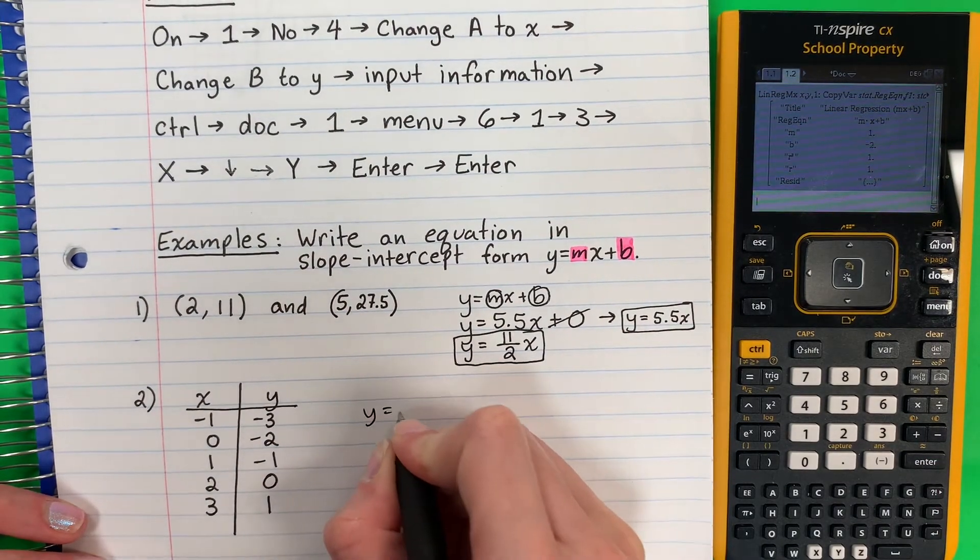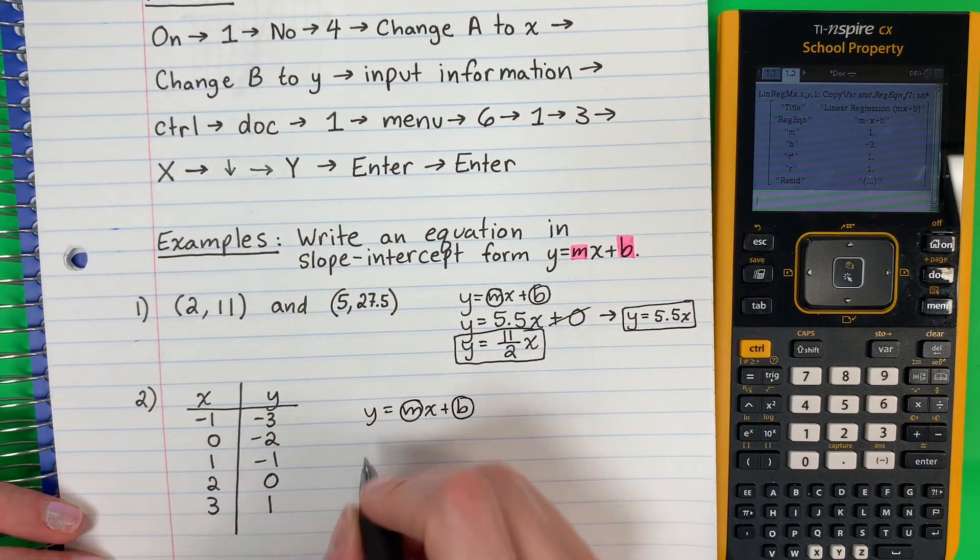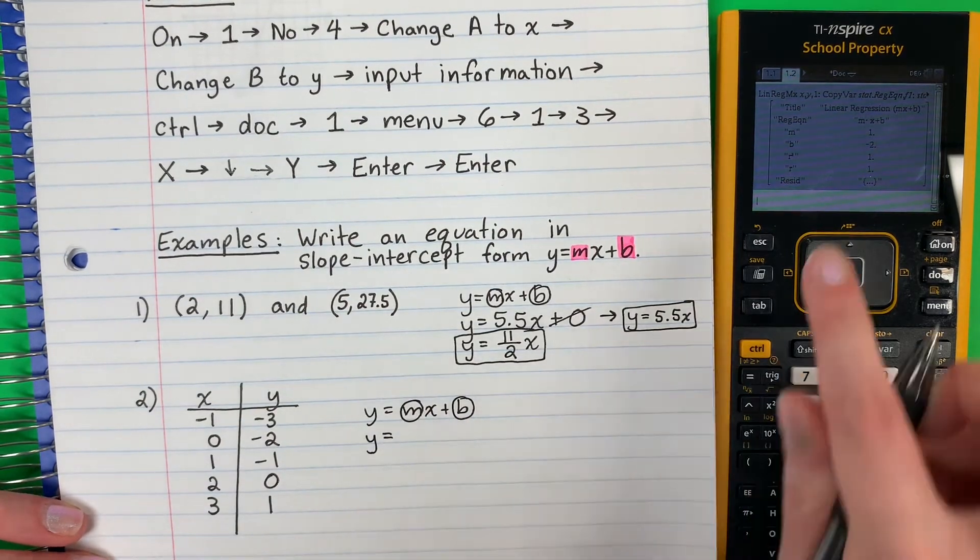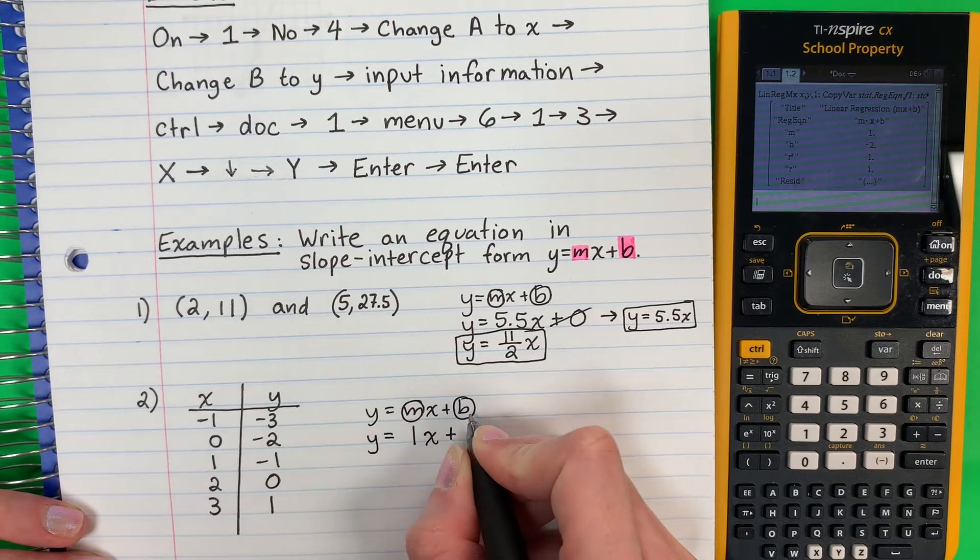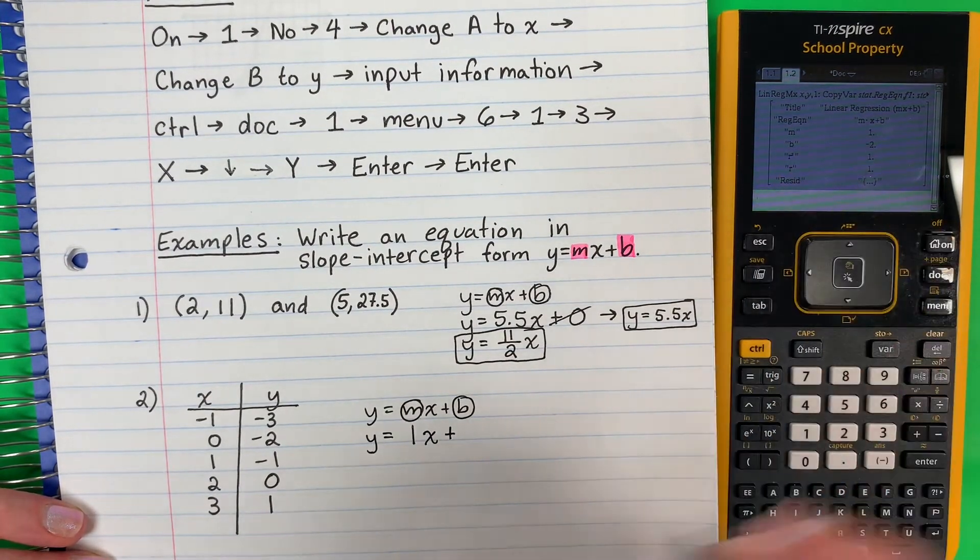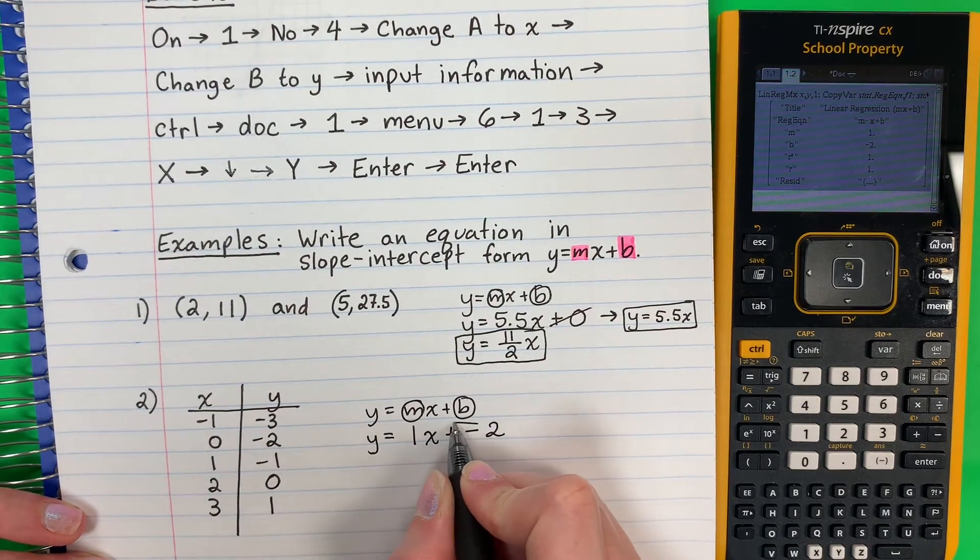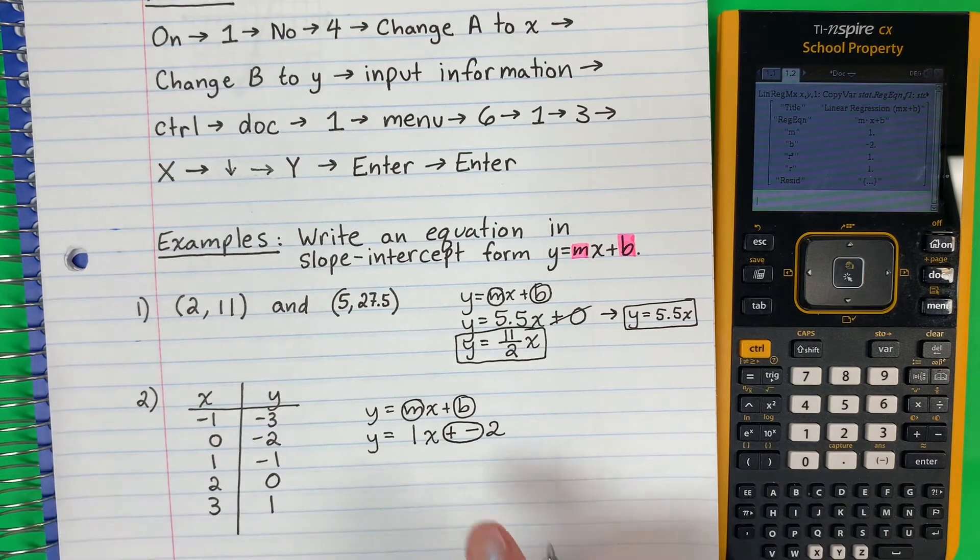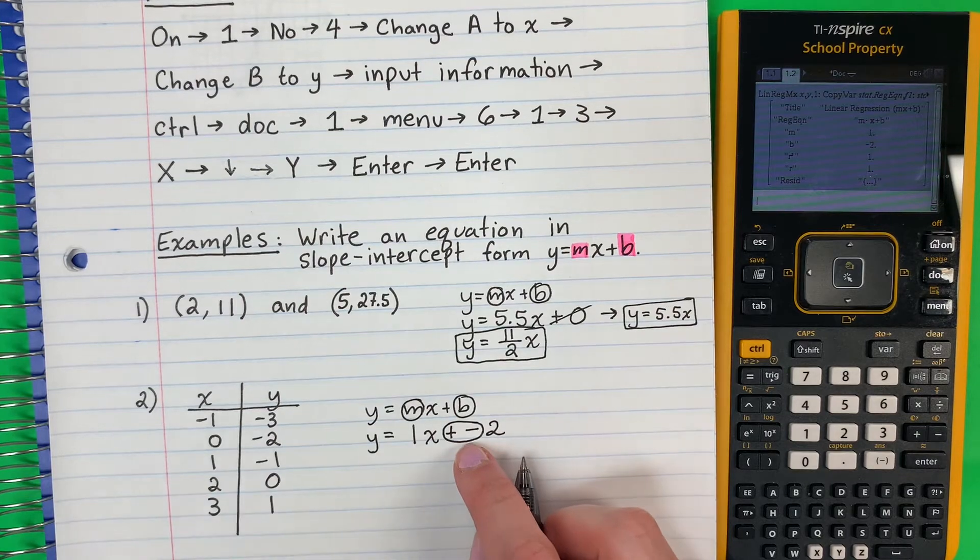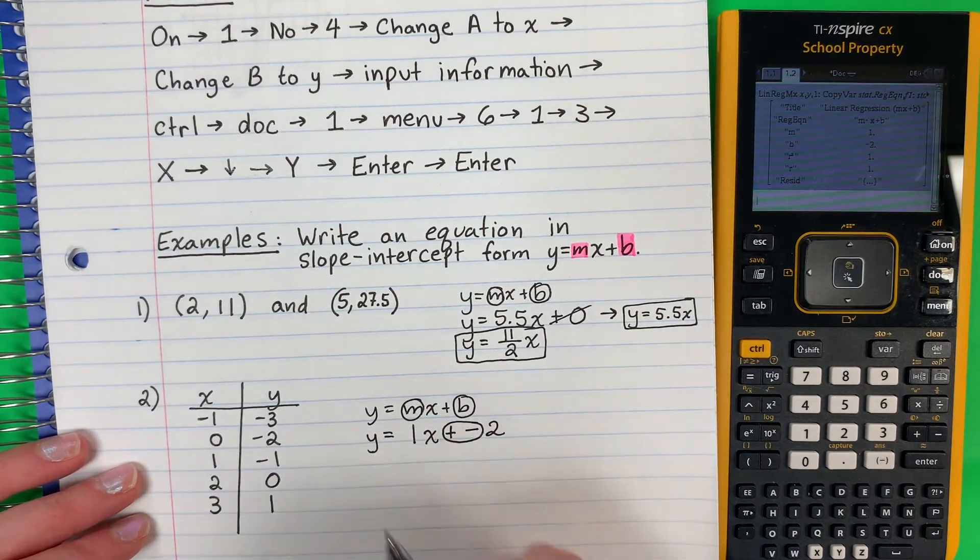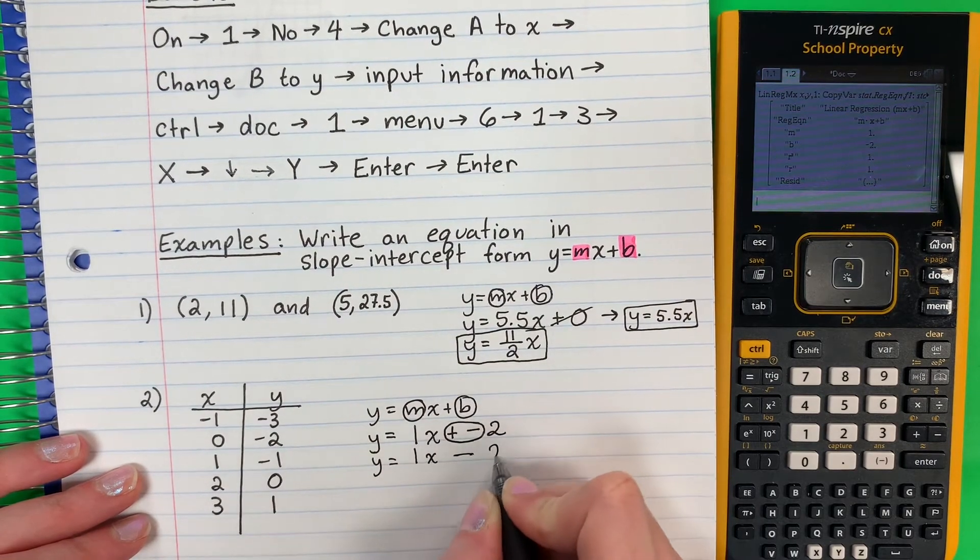So remember, I want Y equals MX plus B. I will change M and B. So I'm going to copy. Y equals M. M is 1. Copy X. Copy plus. B. B is negative 2. So guys, look. What is plus minus? Plus minus. I cannot have two signs together. No puedo tener dos señales juntos. So plus minus is only minus. Más y menos es solamente menos.